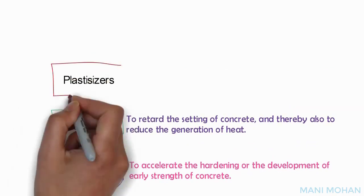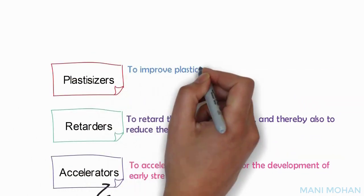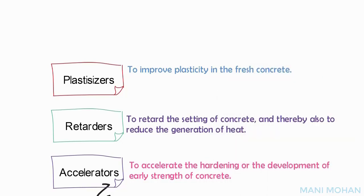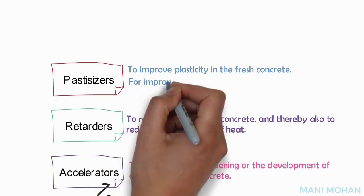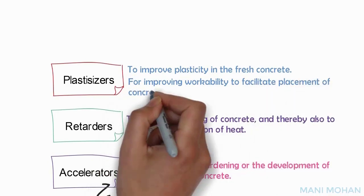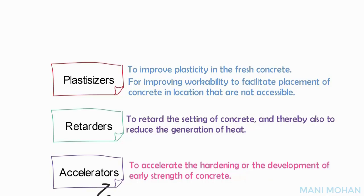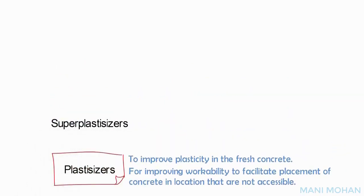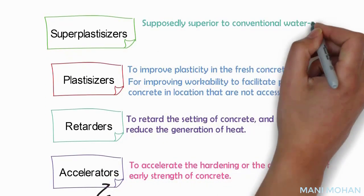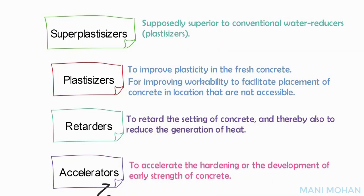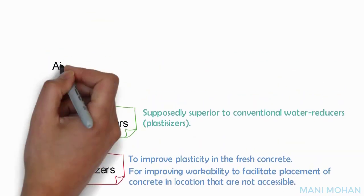Plasticizers or water reducers are chemicals that improve plasticity in fresh concrete. They are mainly used for achieving higher strength by reducing the water-cement ratio, or for improving workability to facilitate placement of concrete in locations that are not easily accessible. Superplasticizers, or high-range water reducers, have higher dosage levels and are superior to conventional water reducers. They are used for the same purposes — to produce high-strength concrete or flowing concrete.